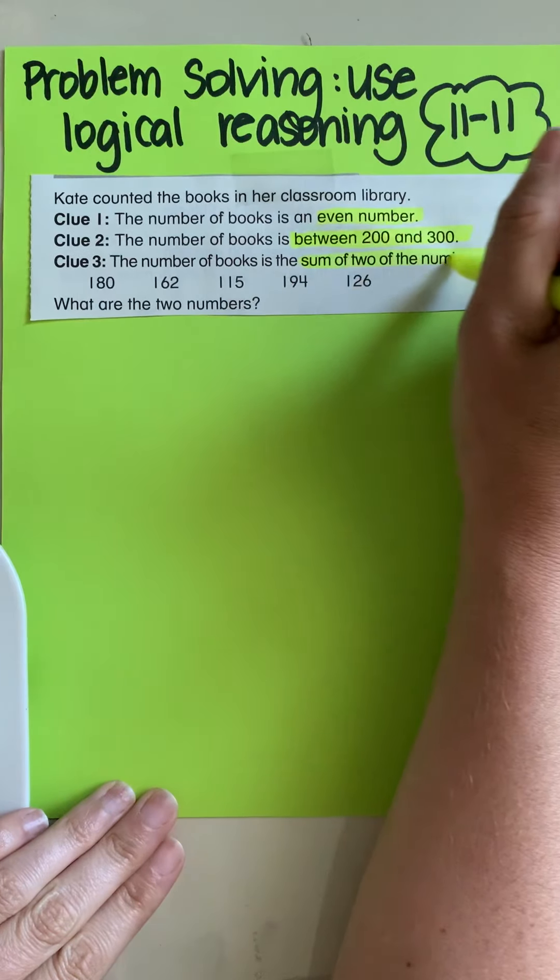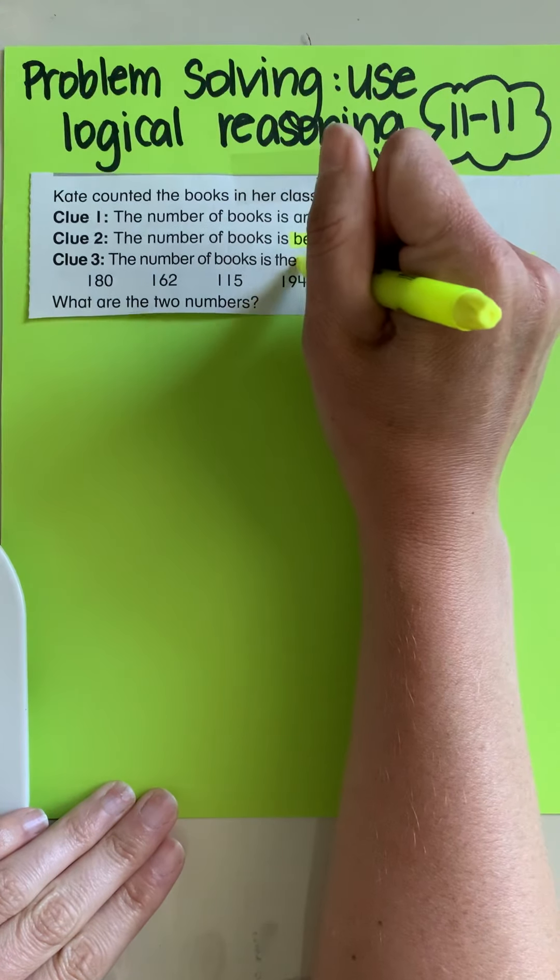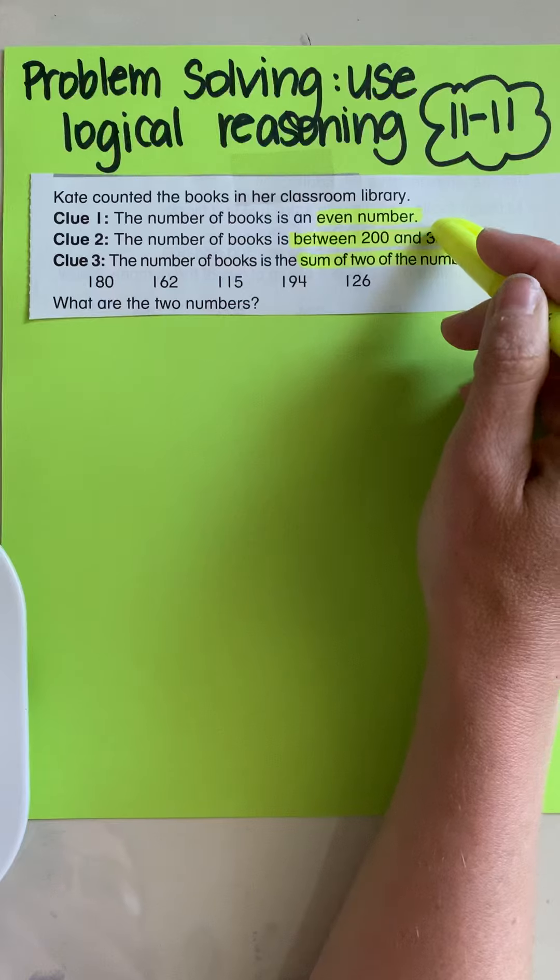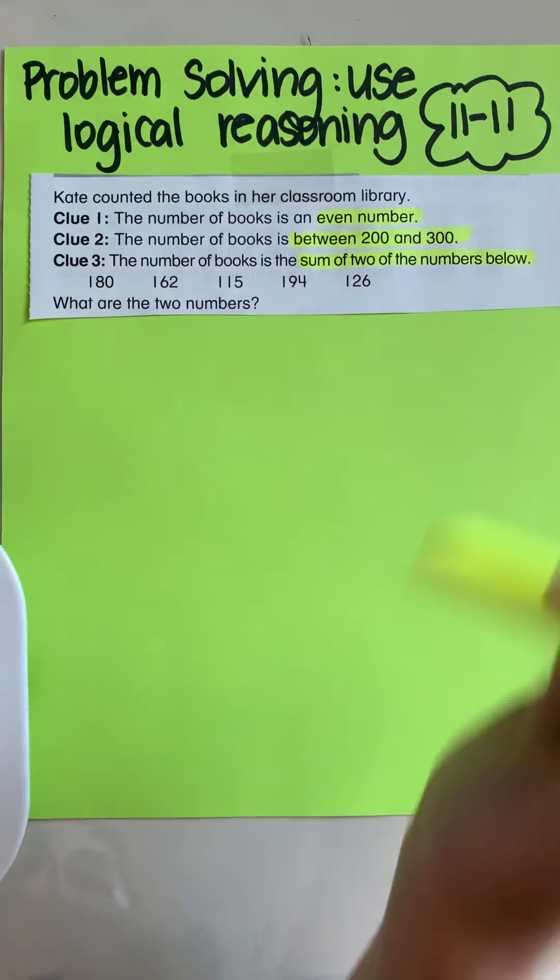This is basically everything that we have learned inside this entire topic. They're asking you three different ways. We talked about even and odd, we talked about estimating, and we talked about adding and subtracting. So we've done all that already.